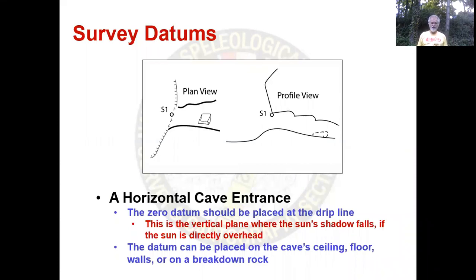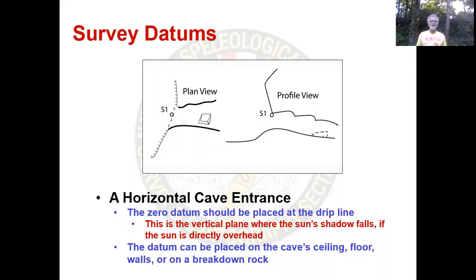For a horizontal cave, the zero datum should be placed at the drip line. This is the vertical plane where the sun shadow falls if the sun is directly overhead. The datum can be placed on the floor, the ceiling, a breakdown block, or the walls — it doesn't matter, just as long as it's somewhere permanent.